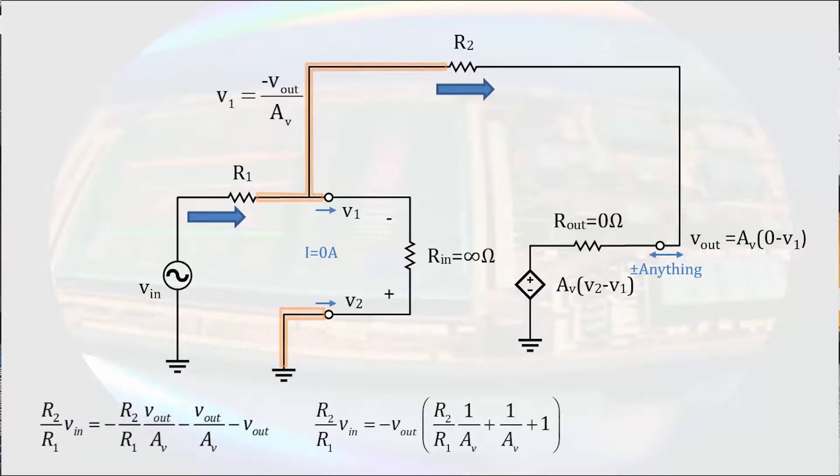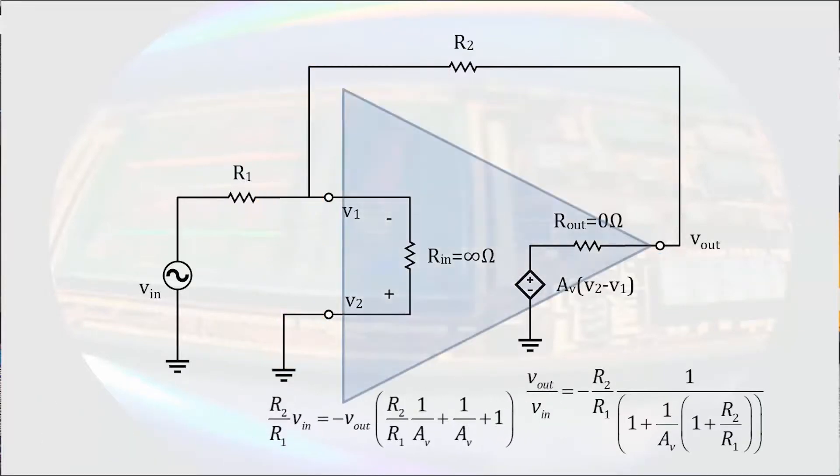The equation that we are left with has some behavior that we might expect. For example, if the open-loop gain goes to infinity, the non-ideal term becomes zero. So the output of the amplifier with respect to the input simply becomes the negative ratio of the resistors. That is the ideal output of an inverting operational amplifier.